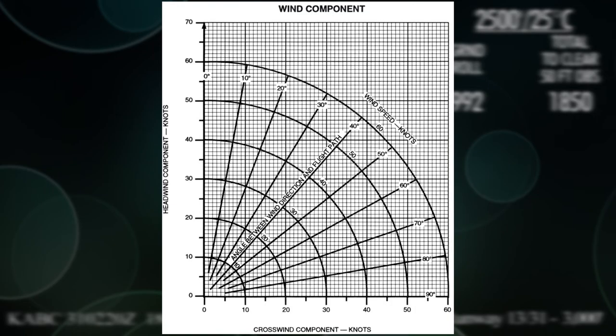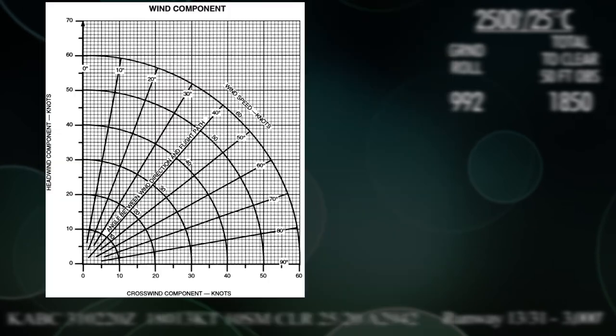On the left side, you have headwind. On the bottom, you have crosswind. The numbers on each axis, they represent the wind speed. On the outside arc, you have degree numbers, and those are the number of degrees between your runway heading and the wind direction. So in our case, we have a 50 degree difference between 130 and 180.